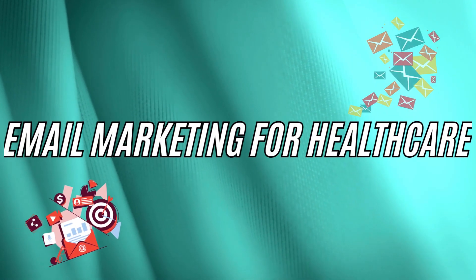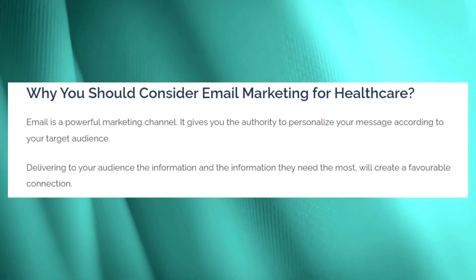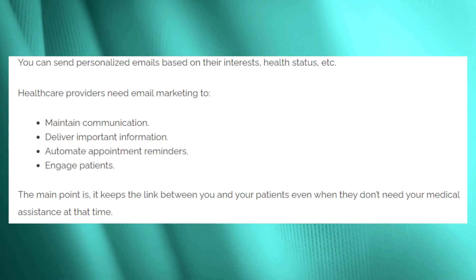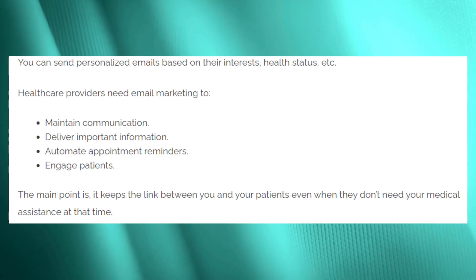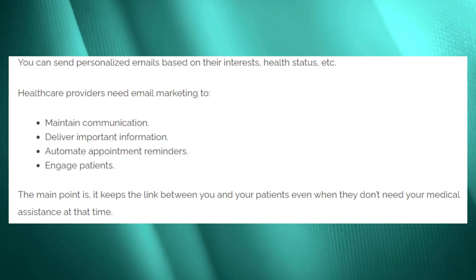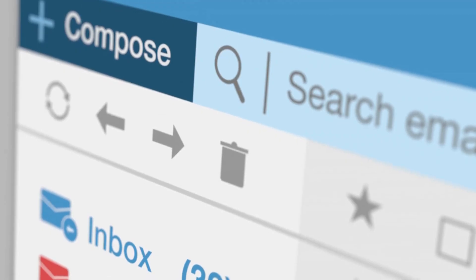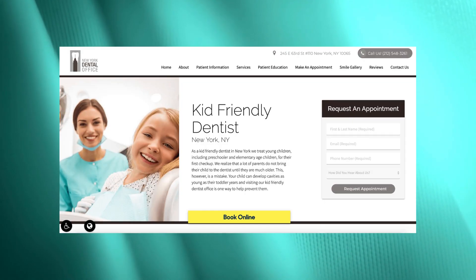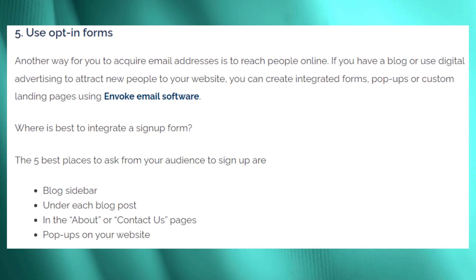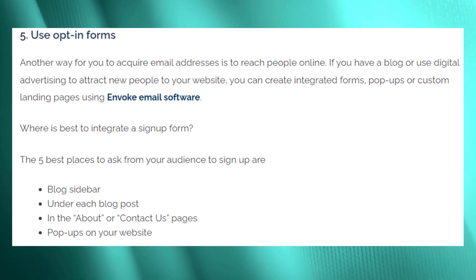Now on healthcare email marketing. Envoke gives examples of email marketing that hospitals can use. Directly providing your audience with valuable information will create a favorable connection. You can send personalized emails based on their interests, health status, etc. Healthcare providers can use email marketing to maintain communication, deliver important information, automate appointment reminders, and engage patients. You can get email addresses when patients schedule an appointment, and they can opt in to receive emails. Envoke also says you can ask your audience to sign up on your blog sidebar, under each blog post, in about or contact pages, or via pop-ups on your website.